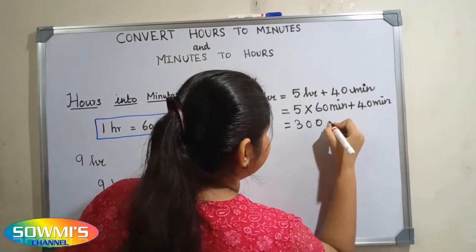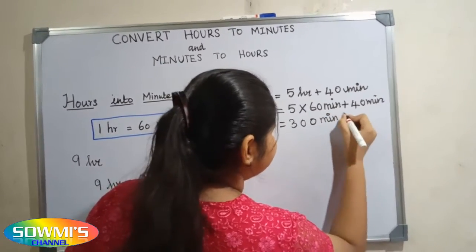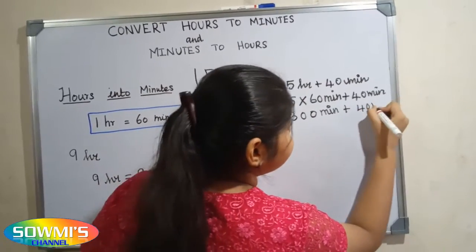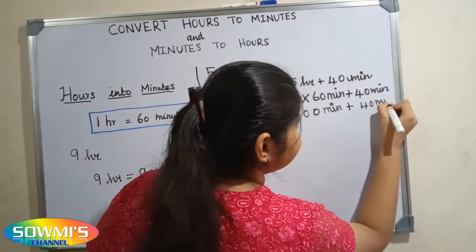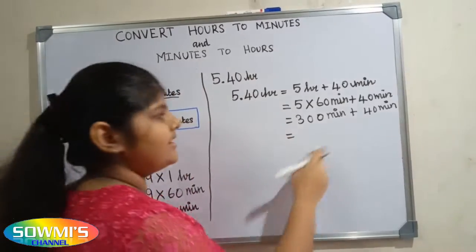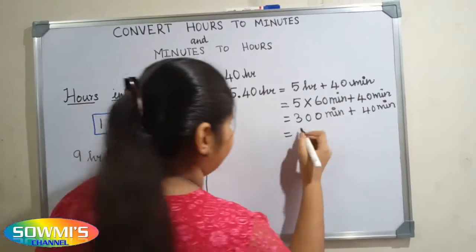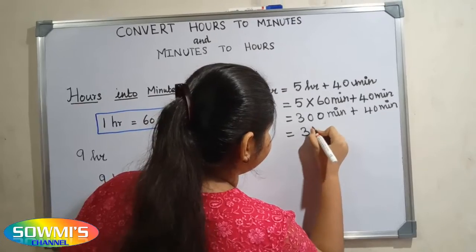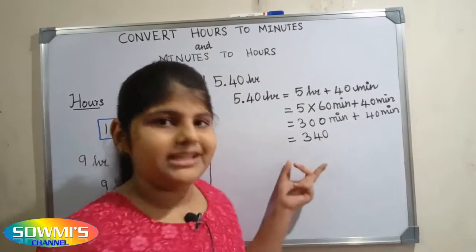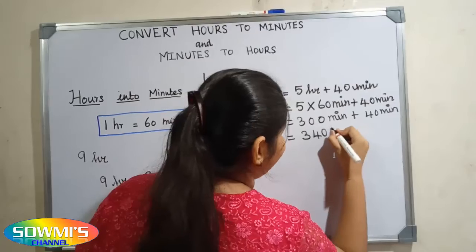5 hours is equal to 5 multiplied by 60 minutes, which gives 300 minutes. 300 minutes plus 40 minutes is equal to 340. So the answer is 340 minutes.